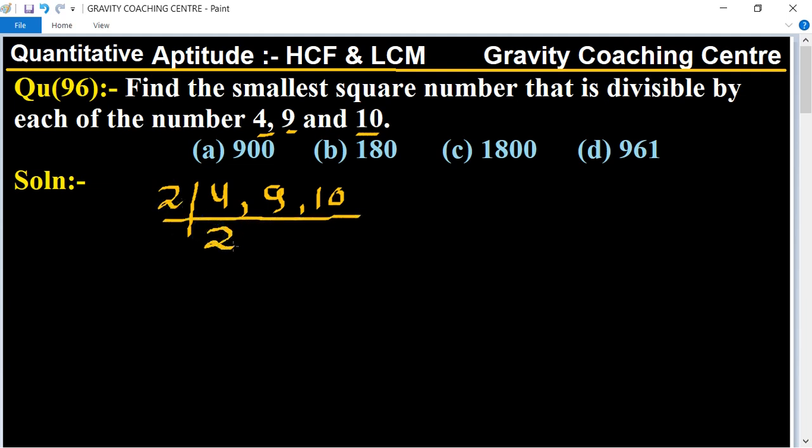Two twos of 4, two and 5. Therefore, LCM equals 2 times 2 times 9 times 5.